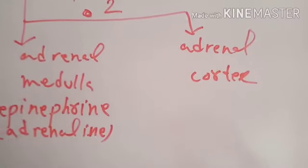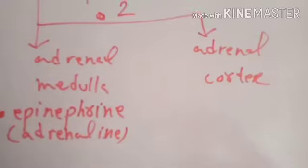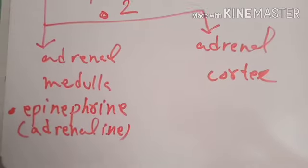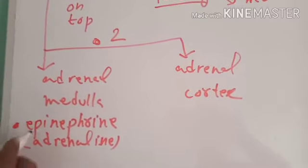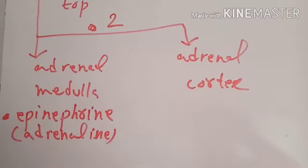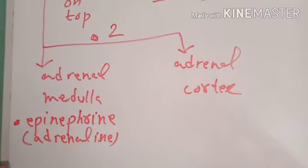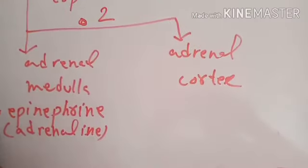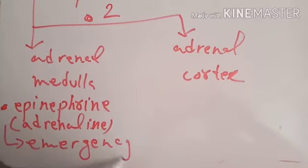Adrenaline in common language is called power hormone, energy hormone, or also emergency hormone. This hormone, epinephrine or adrenaline, is also called emergency hormone because it is produced under emergency in urgent conditions.